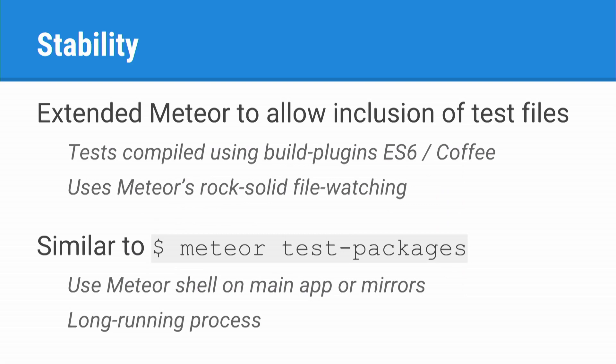The big thing that we did is we added a lot of stability. A bit of history: the way Velocity used to work is it would start up a mirror by waiting for Meteor to finish its build process, then start a node process at the end of that on the build files, which would start a separate server. We were doing a lot of fiddly stuff keeping that in sync. What we've done now is instead of that, we've forked the whole Meteor, and it now compiles all the tests inside the test directory into a separate temporary directory.